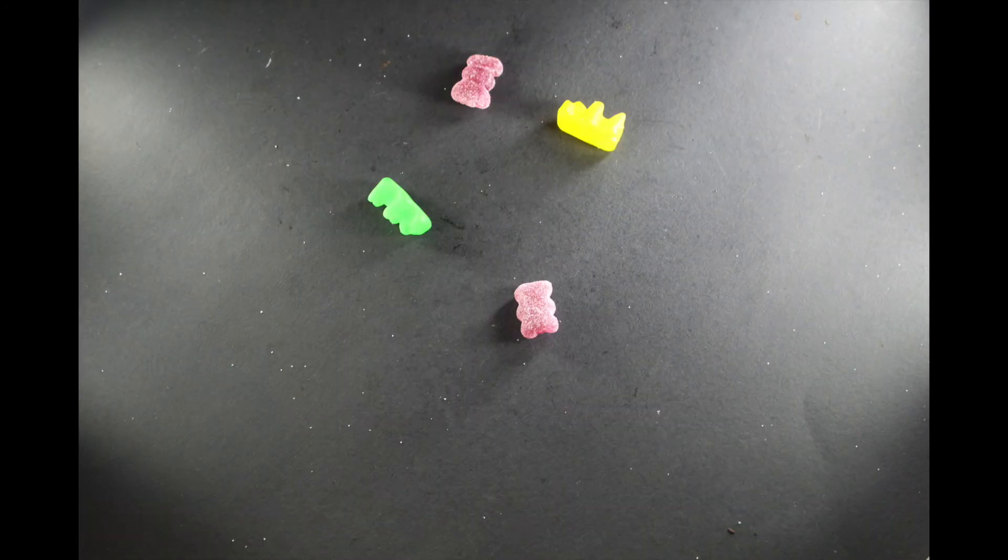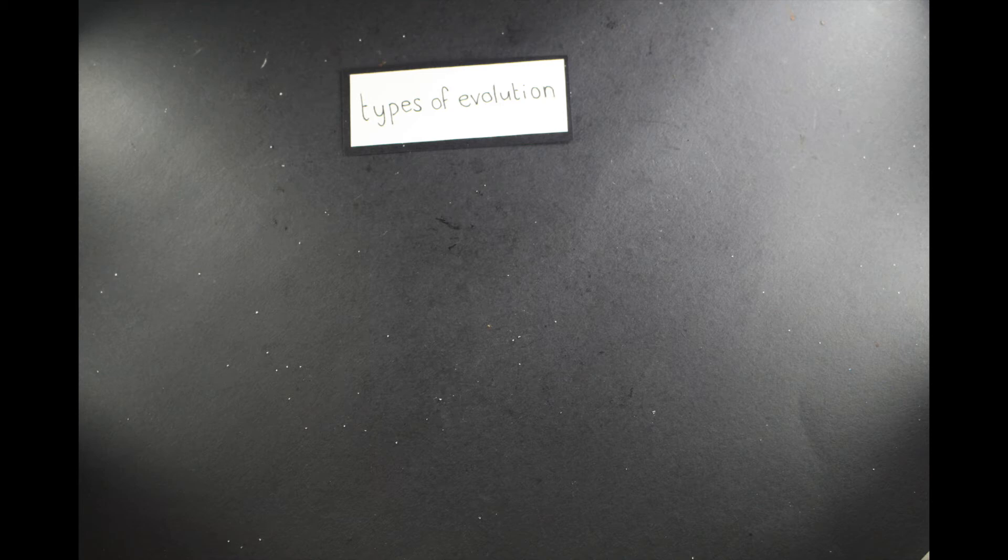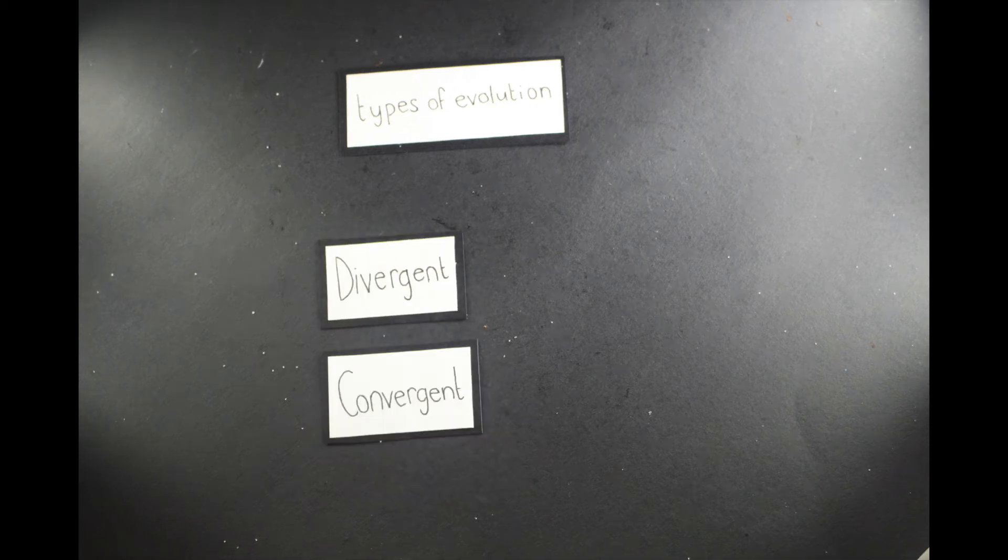This can lead to extinction. There are three types of evolution: divergent, convergent and parallel.